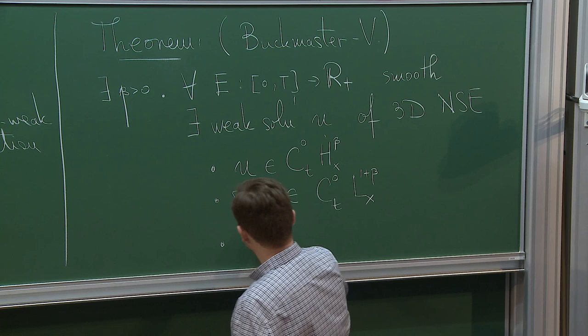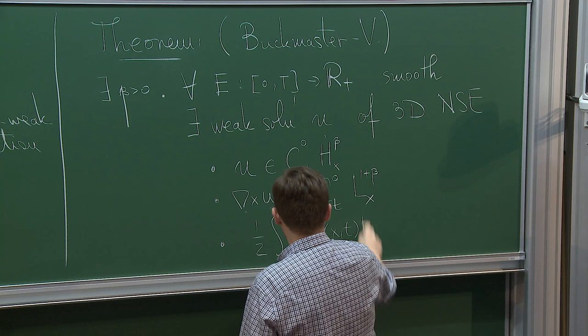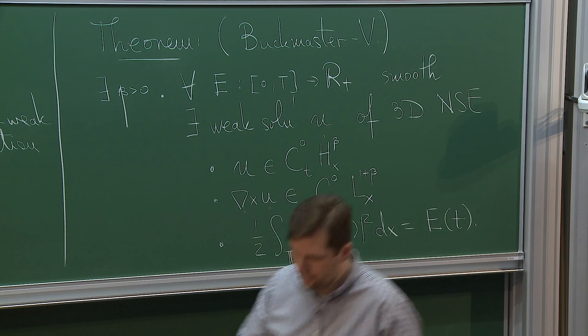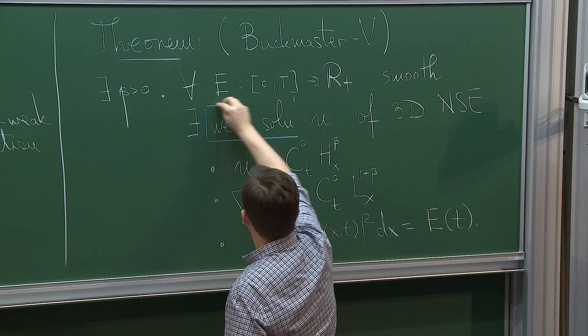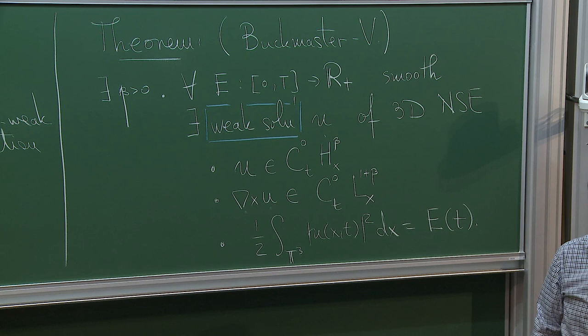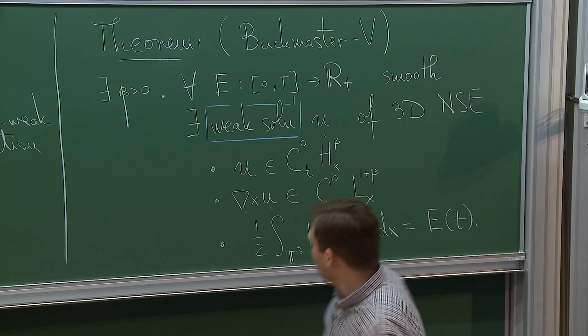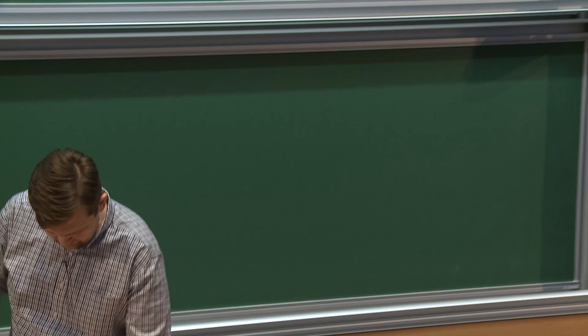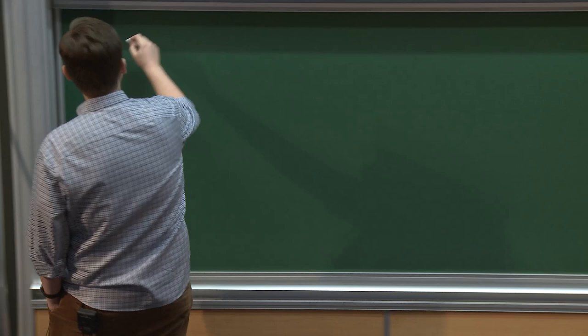You may ask: if the velocity is so rough, can you even make sense of gradients, or the vorticity? The answer is yes — the vorticity is a bit better than L1. The disturbing part of this theorem is that the kinetic energy of U is exactly that function E(t). Notice very importantly that I have called this a weak solution and not a Leray weak solution. There are several consequences of this theorem I want to discuss.